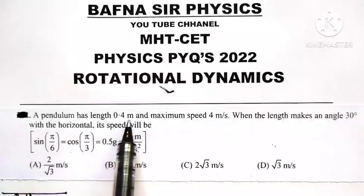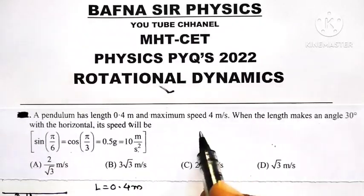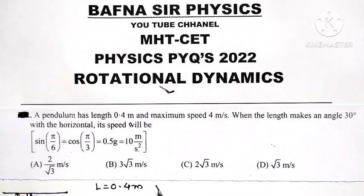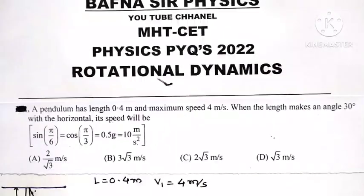A pendulum has a length 0.4 meters and maximum speed 4 meters per second. Let V1 be the maximum speed at 4 meters per second. Remember, a pendulum has maximum speed when it is at its mean position.